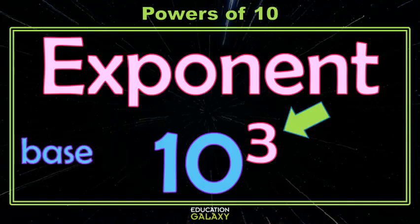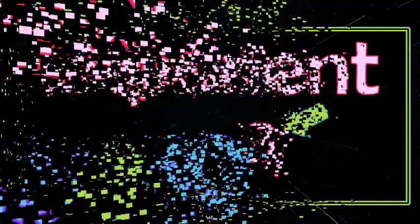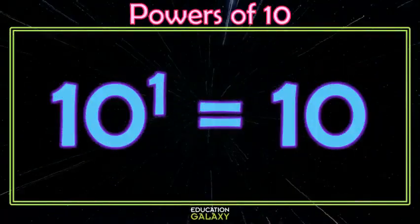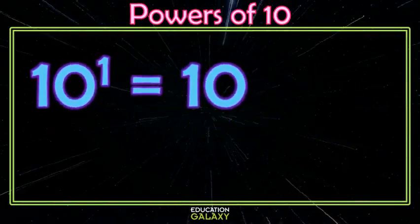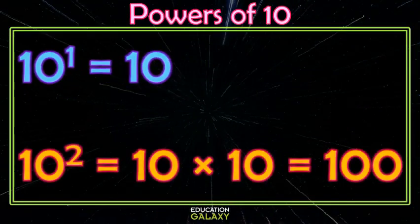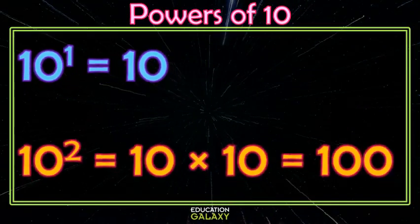So what do these numbers mean? Well, let's investigate. If we have 10 to the first power, that just means we have 1, 10. We're not multiplying it by itself any more times than that. But if we have 10 to the second power, we're multiplying 10 by itself 2 times, which gives us 100.